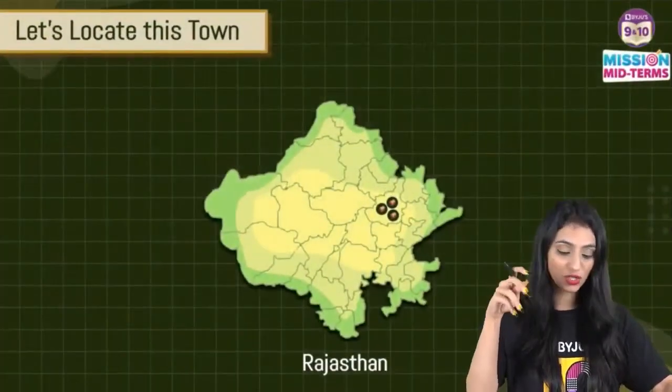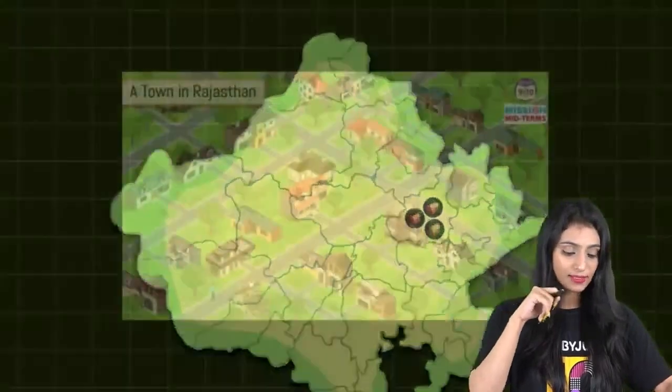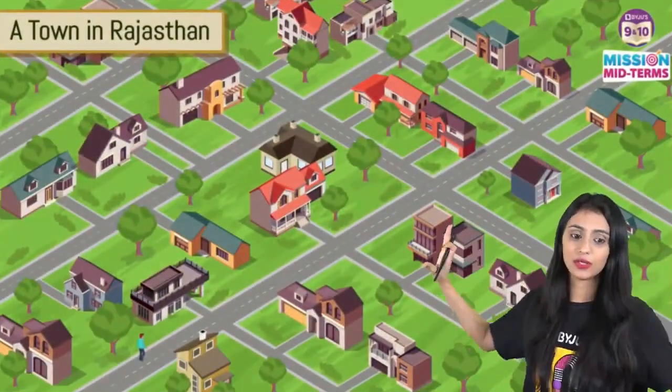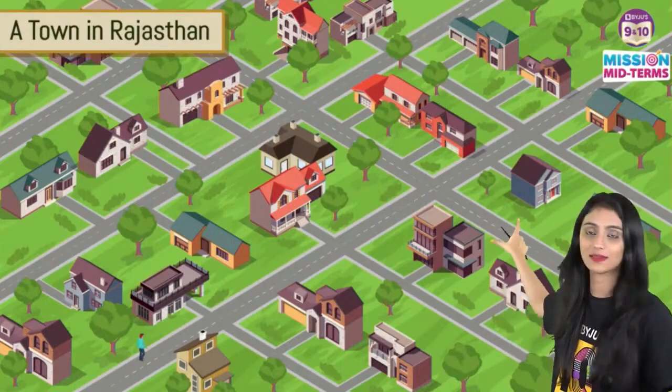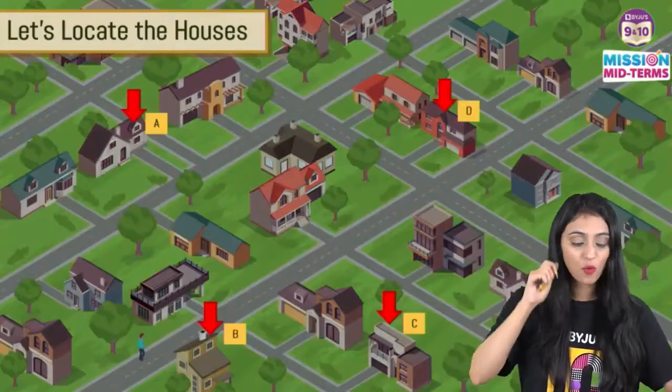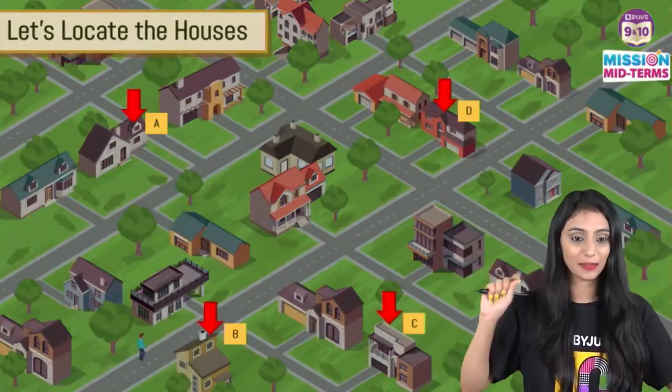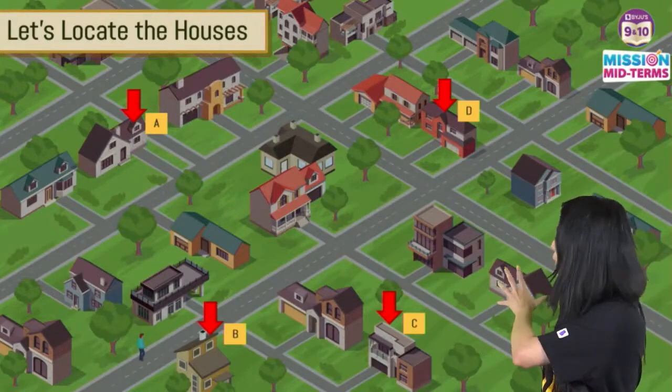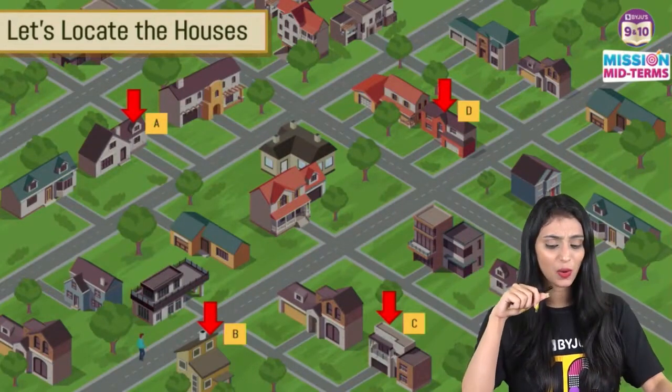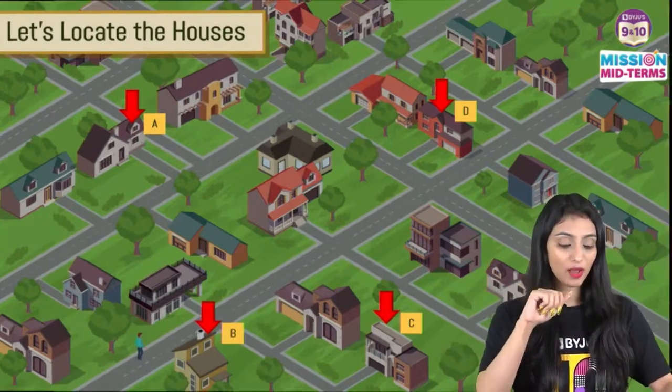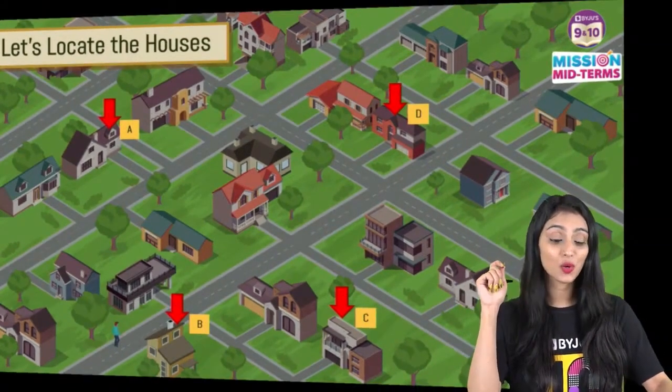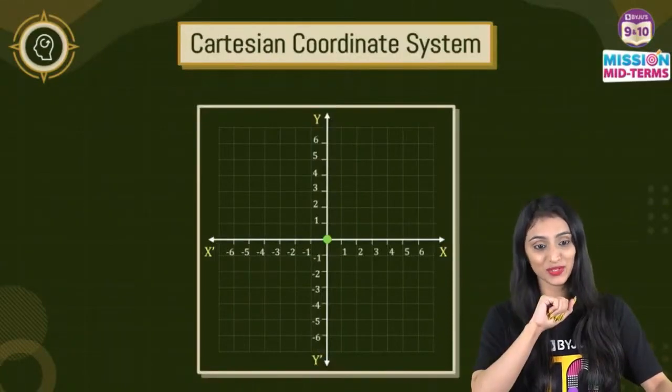Now if I have to locate a particular town in Rajasthan, it's here, right? So let's locate this town. This is the town that I was showing you in the map. When we go deeper into this, now we see this is the town. These are the four houses here, A, B, C, and D, right? In this town of Rajasthan, if I have to find out the exact location of these houses, that's where the Cartesian coordinate system comes into picture.